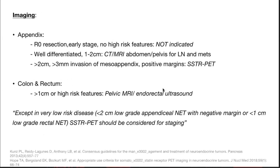For imaging in appendix NETs: if R0 resection is done, it is early stage with no high-risk features, so imaging is not indicated. However, if the tumor is well-differentiated and 1 to 2 cm, CT or MRI abdomen/pelvis for lymph node and metastasis should be done. If more than 2 cm, or more than 3 mm invasion of mesoappendix, or if margins are positive in initial appendicectomy, functional imaging should be done.